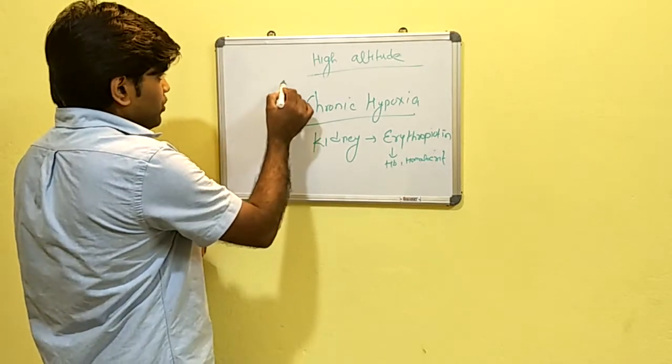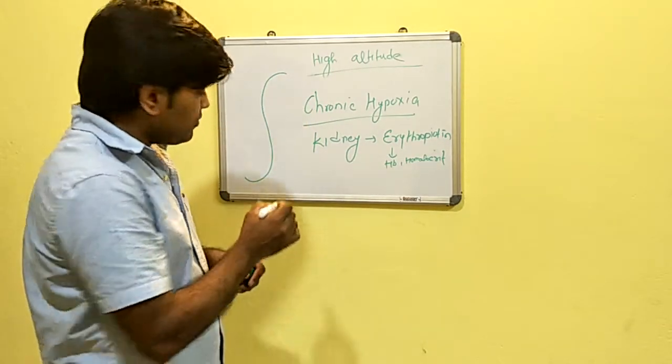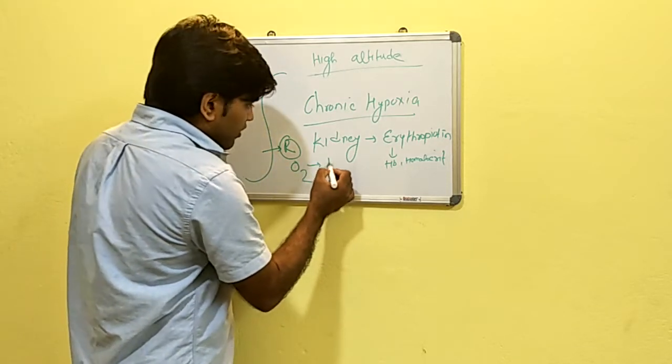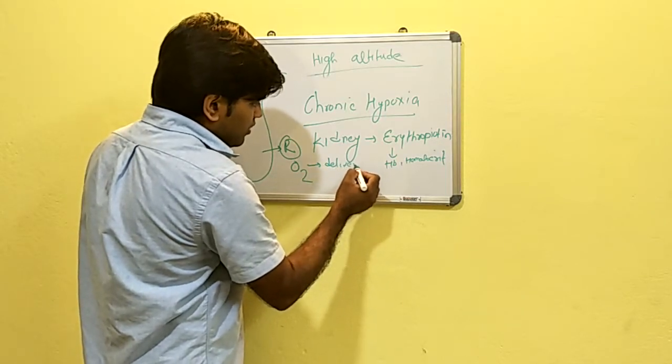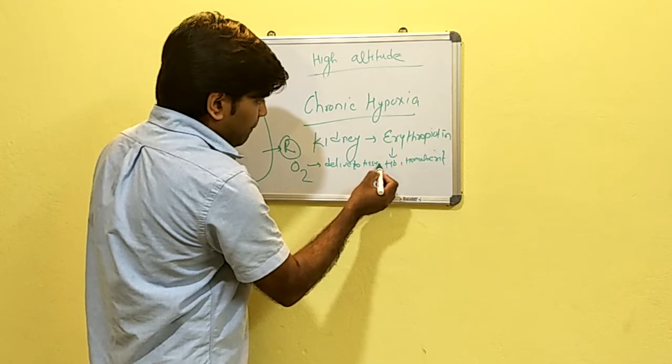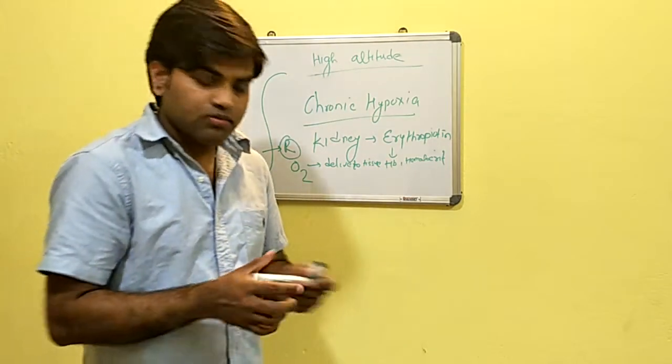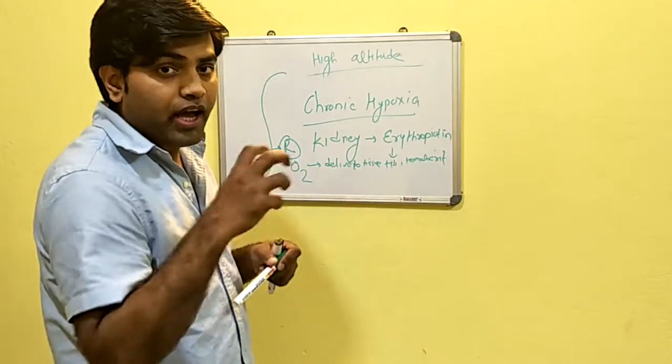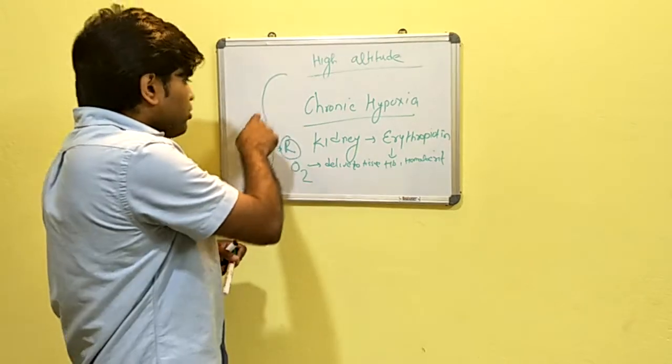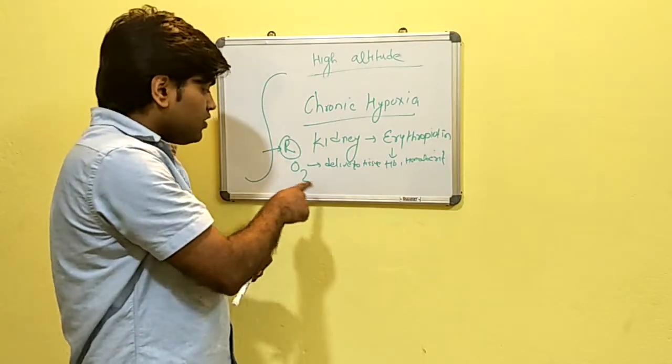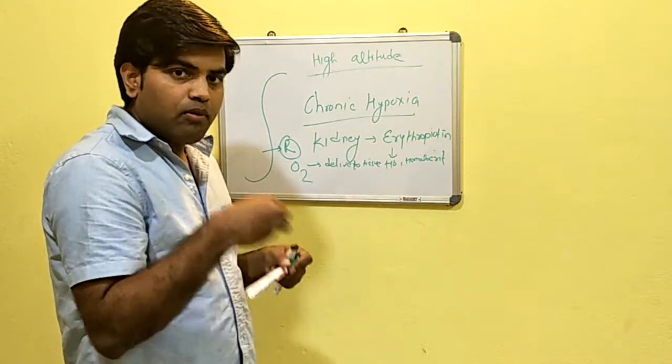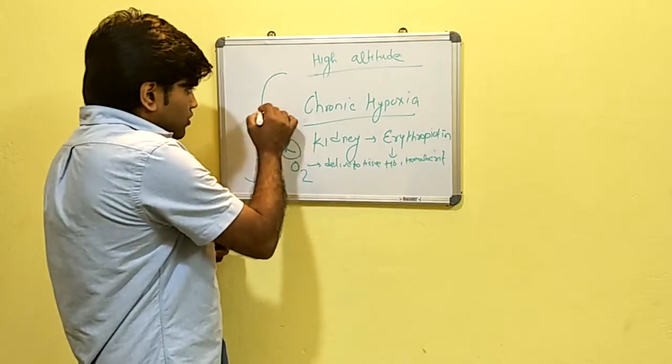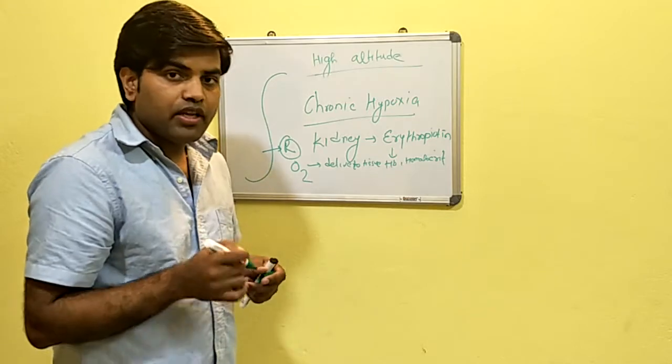There will be other changes as well. Since you know about the oxy-hemoglobin dissociation curve, when it shifts to right, it releases the oxygen to deliver to tissue. Since there is hypoxia, tissue needs oxygen. For that, we need oxygen to be extracted from the hemoglobin, and for that, this oxy-hemoglobin dissociation curve should shift to the right.